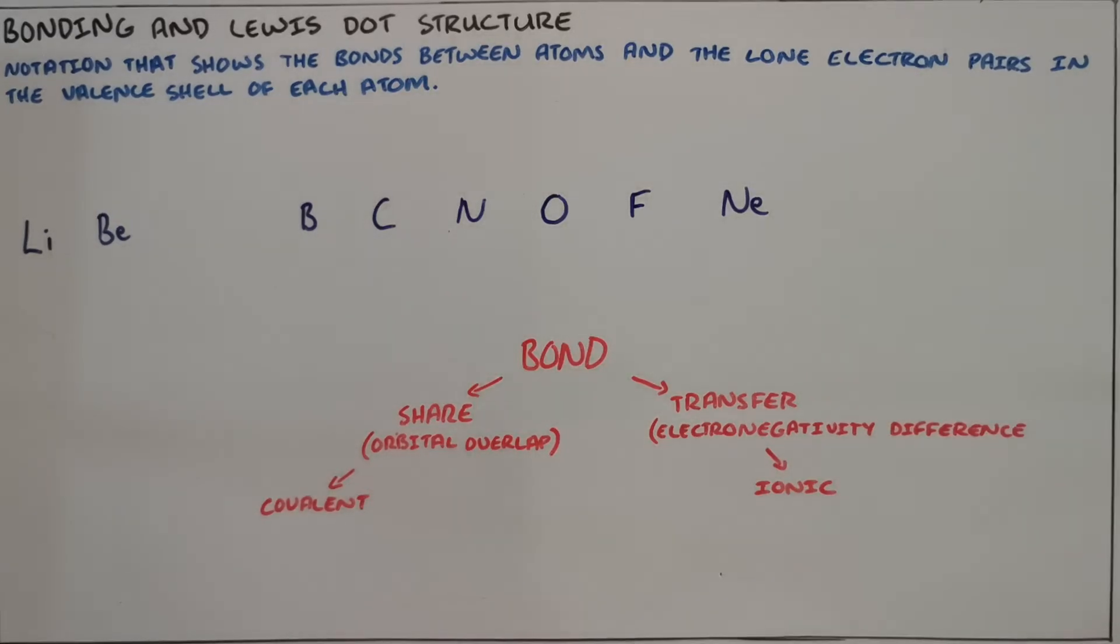A Lewis dot structure is a notation that we use that shows bonds between atoms and lone electron pairs in the valence shell of each atom.